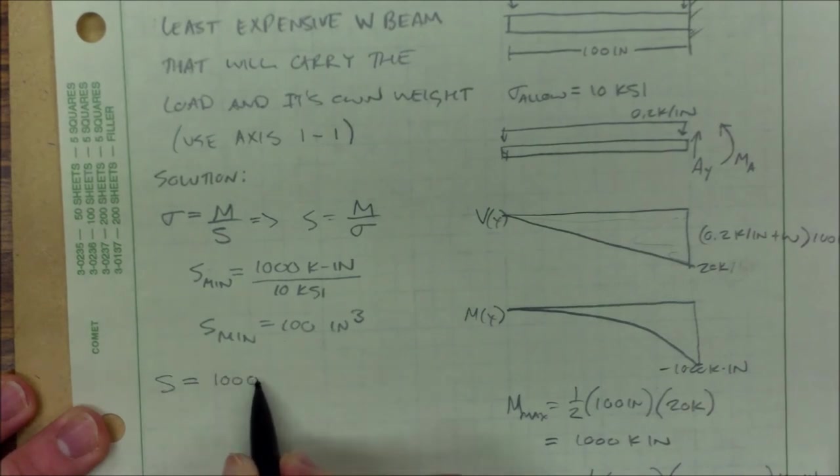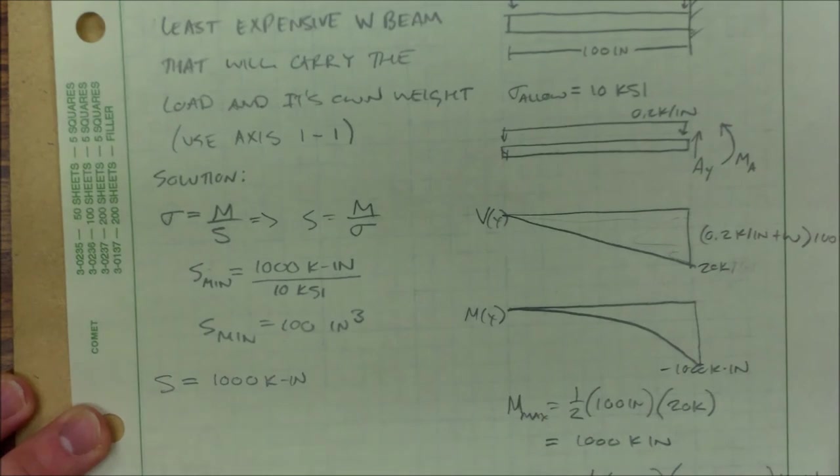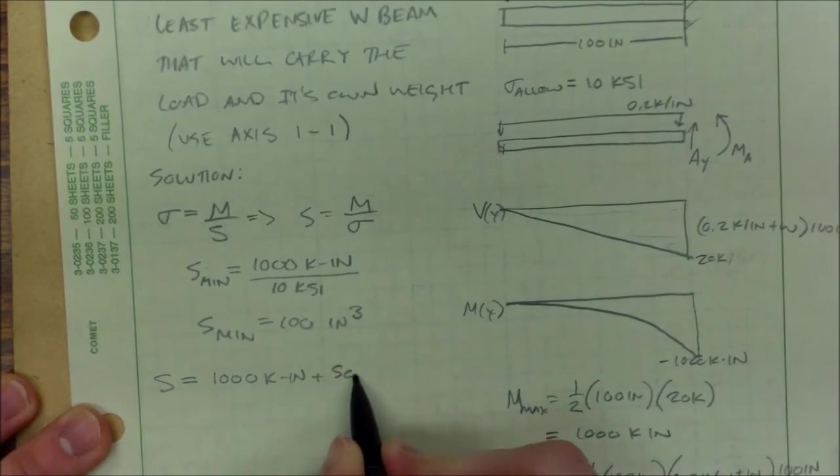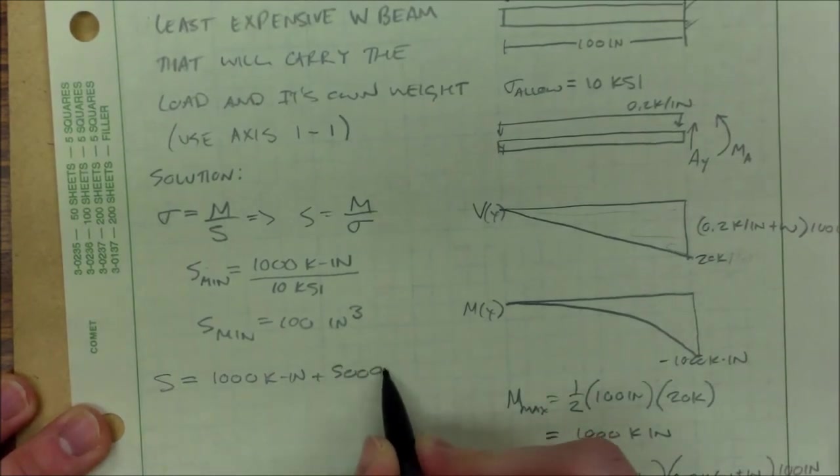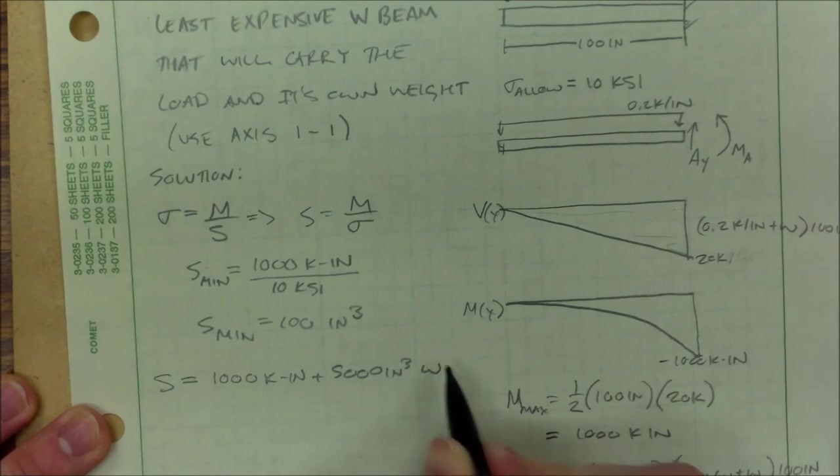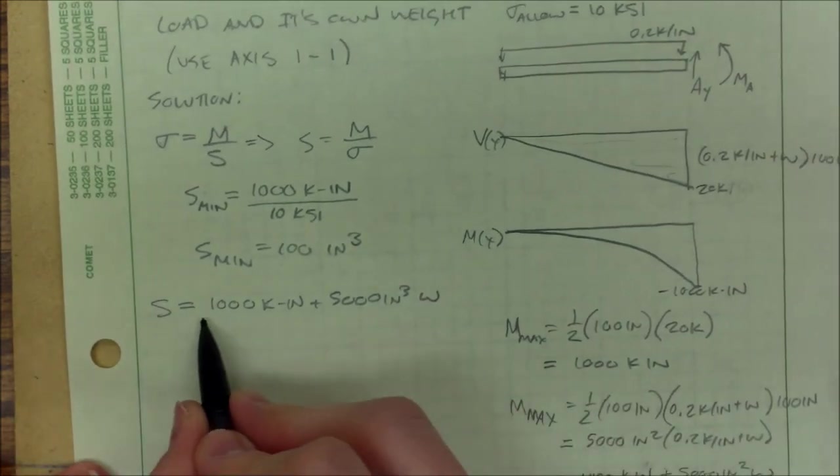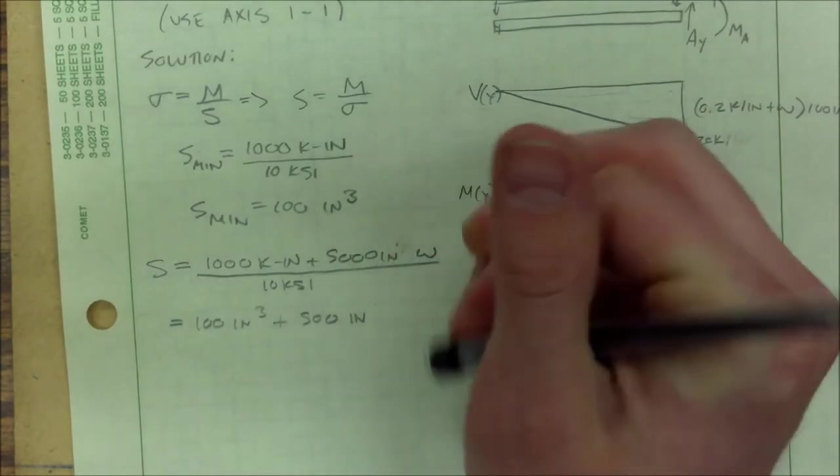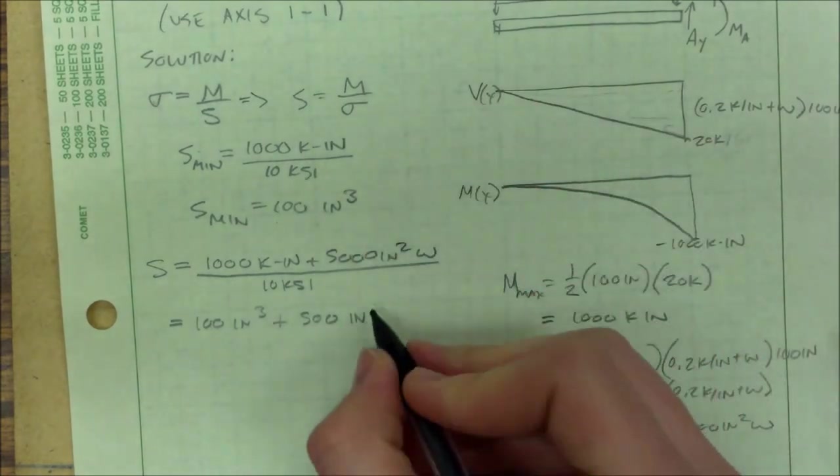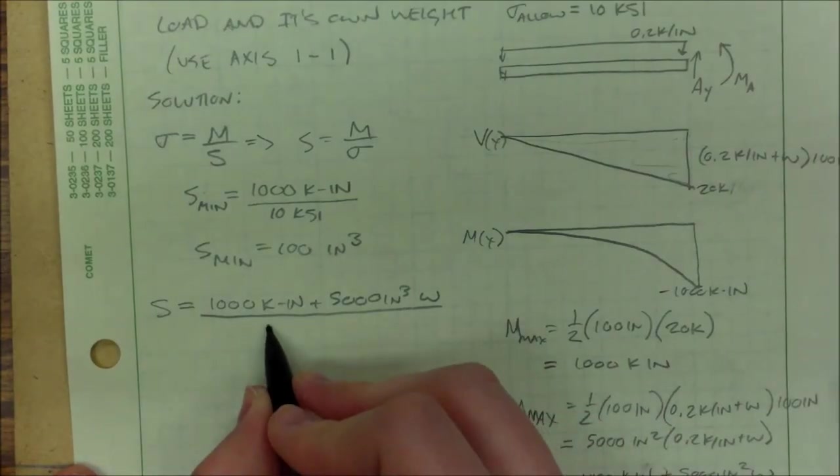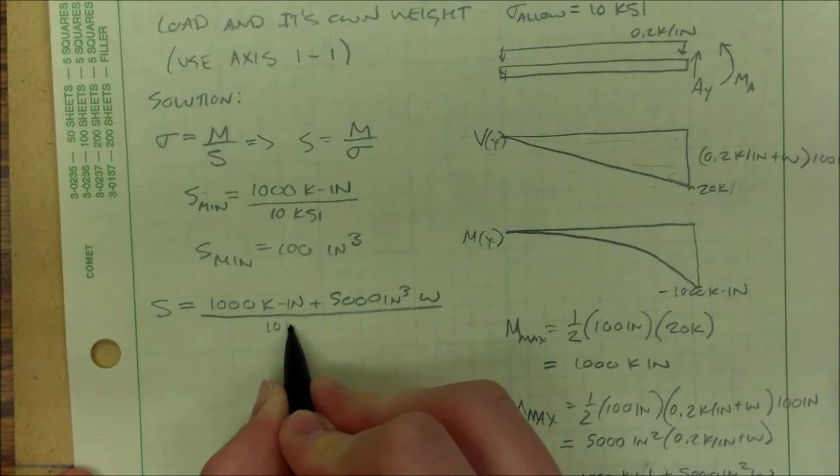And then we can easily go through the table and plug in different weights and compare it to its section modulus. So I have 1,000 kip inches, just like before, with an additional 5,000 inches cubed times whatever w happens to be. Oh, it's squared. Divided by our allowable normal stress, 10 ksi.